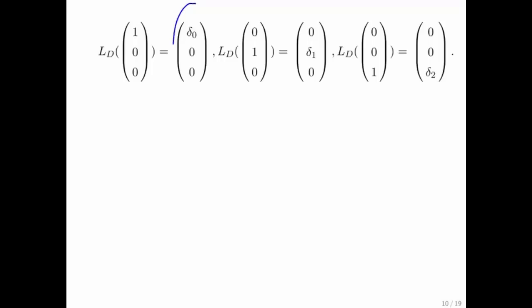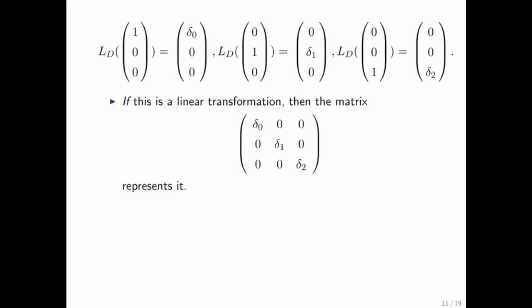These become the columns of the possible matrix as such. So the question becomes, is the matrix vector multiply the same as applying the vector function?